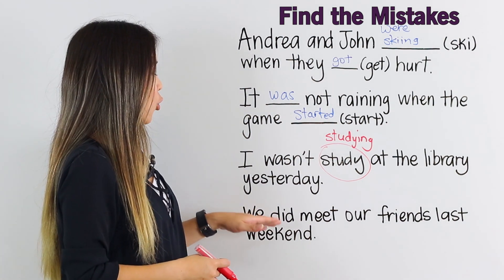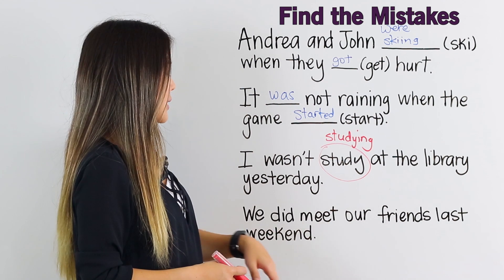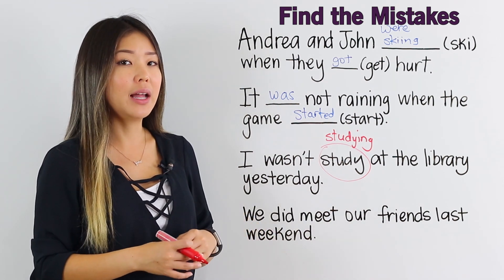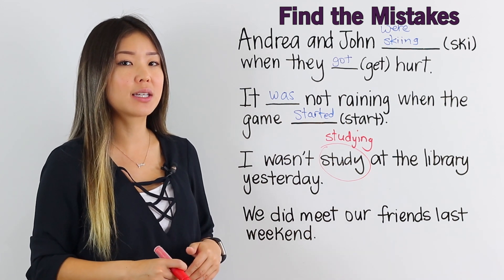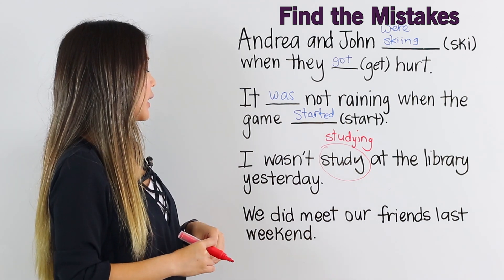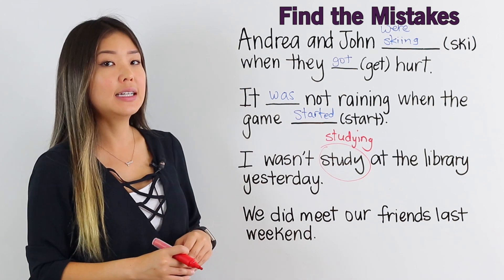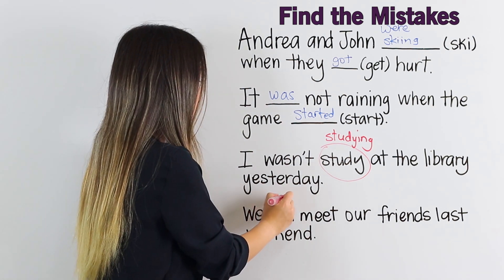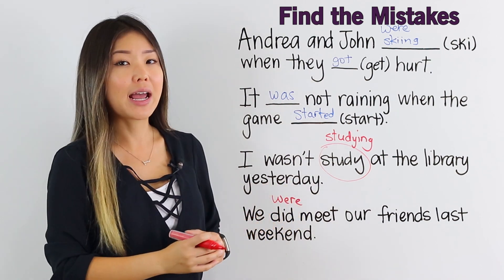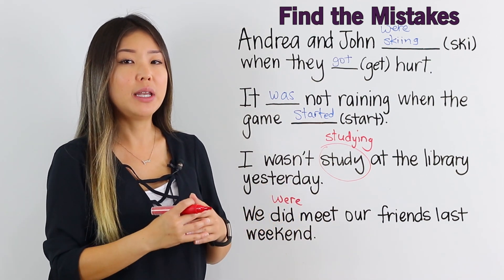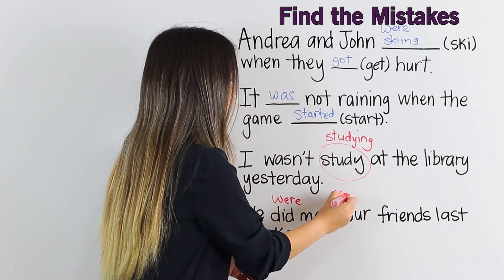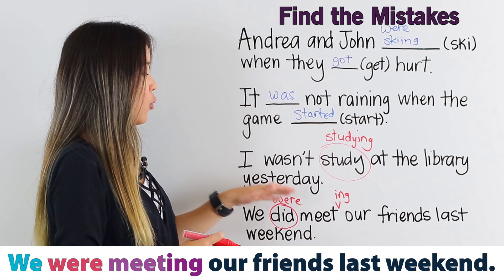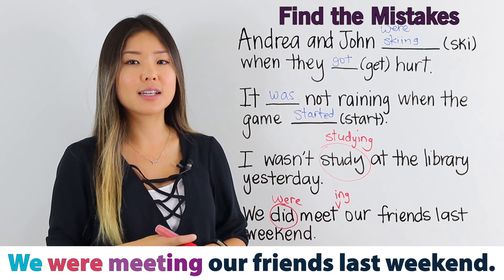And finally: We did meet our friends last weekend. That sounds right, but remember, we're doing the past continuous tense. The subject is we, so we need a be verb — were. Then we need to add –ing to the end of the verb. So we take out did and say, we were meeting our friends last weekend.